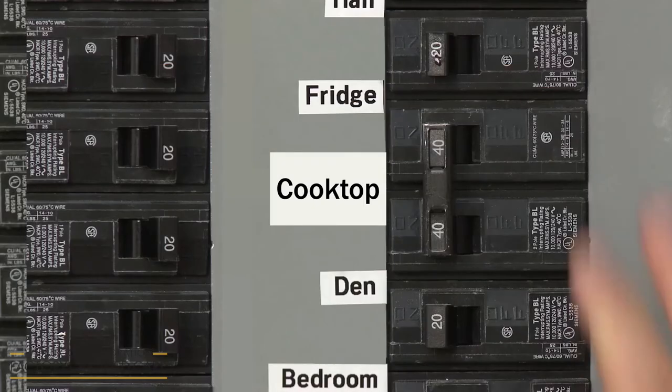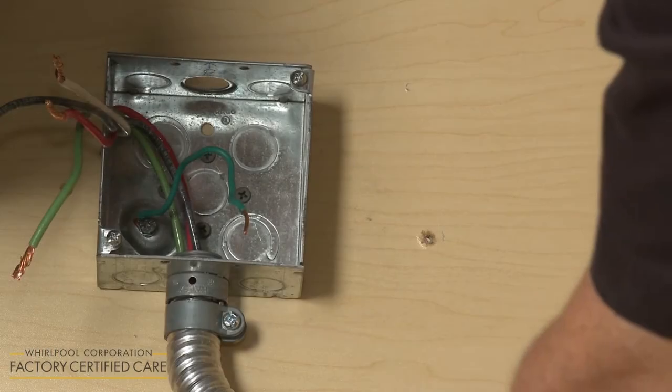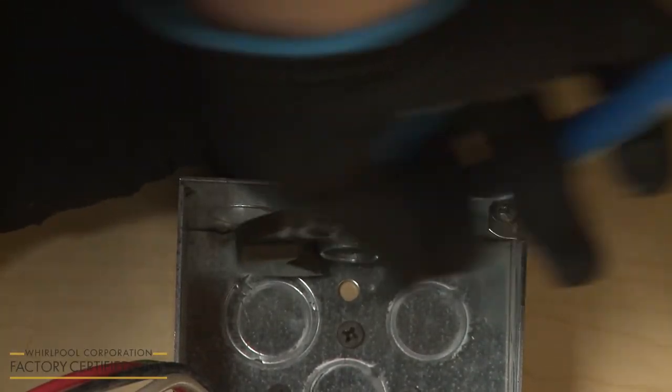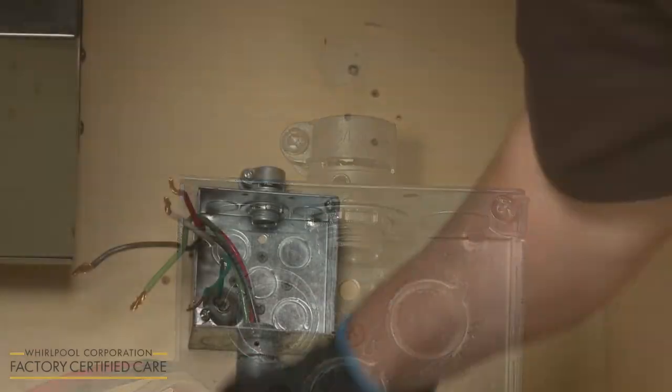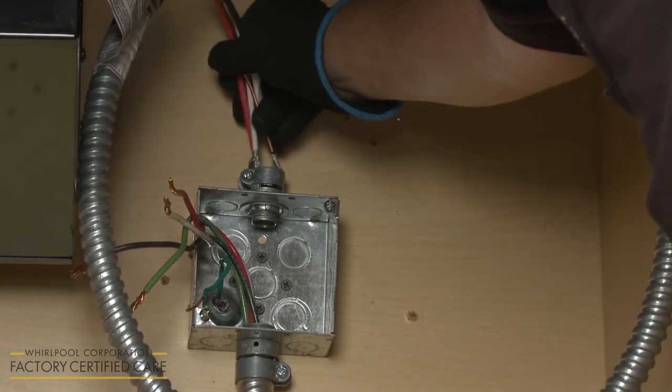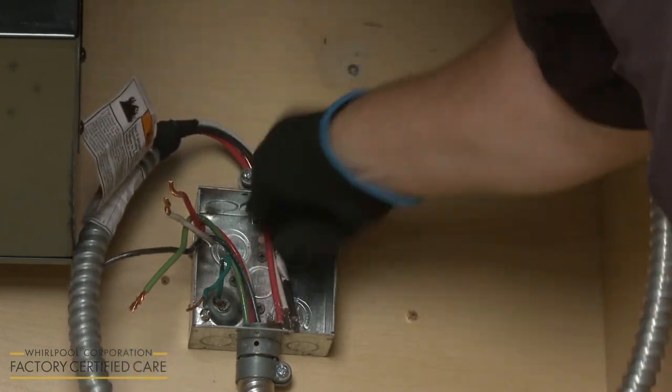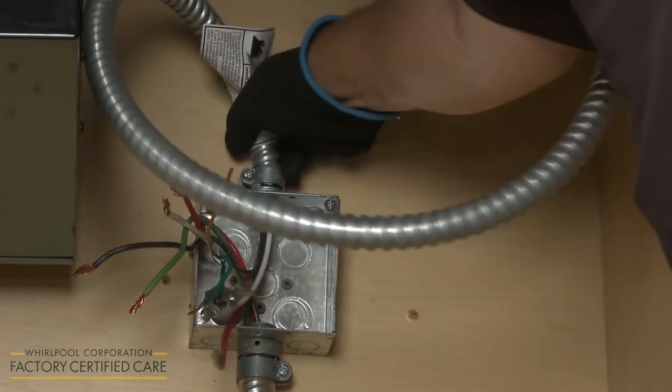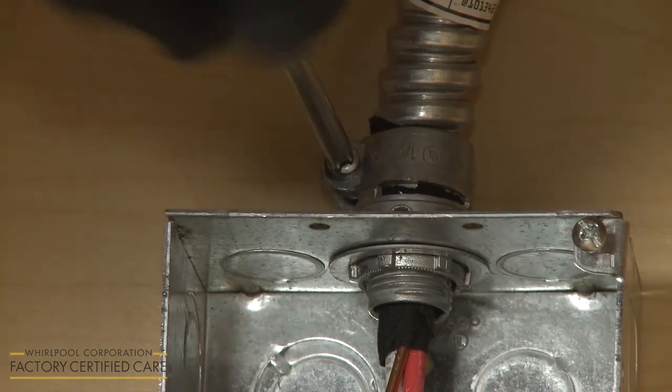Be sure to shut off the power to the cooktop junction box before connecting the power supply line. If necessary, remove the junction box cover. Use a UL-listed or CSA-approved half-inch diameter conduit connector to connect the flexible cable conduit from the cooktop to the junction box. If applicable, tighten the screw or screws to secure the conduit.